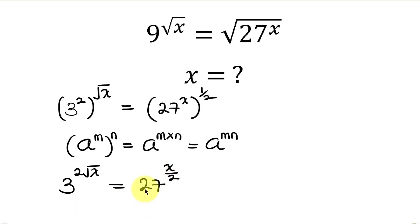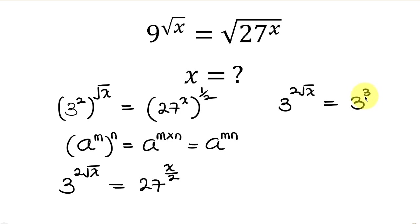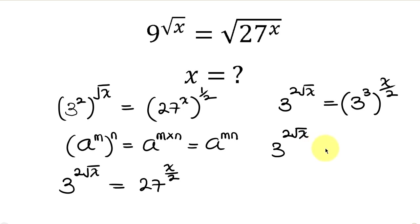Our next step is to simplify 27. On the left we have 3 to the 2√x. On the right hand side, 27 is the same as 3 to the 3, and this is raised to the x over 2. Applying the law of indices one more time, the right becomes 3 to the 3 times x over 2, which gives 3 to the 3x over 2.